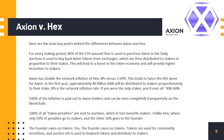In the first year, approximately 40 billion AXN will be distributed to stakers proportionate to their stake — 8% is the network inflation rate. If you were the only staker, you'd earn all 40 billion AXN. 100% of the inflation is paid out to Axion holders and can be seen completely transparently on the blockchain. 100% of all token penalties are sent to auctions, which in turn benefits stakers — unlike HEX, where only 50% of penalties go to stakers and the other 50% goes to the founder.